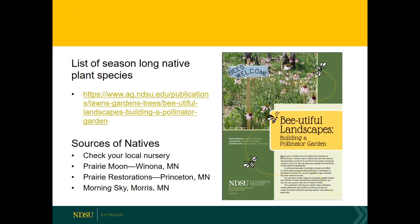For a list of native plants with pictures and a chart organized by season, search for the NDSU Extension publication 'Beautiful Landscapes: Building a Pollinator Garden.' For sources of native plants, first check with your local nursery. Alternative sources include Prairie Moon Nursery, Prairie Restorations, and Morning Sky — these also have catalogs available if you prefer browsing a physical catalog.